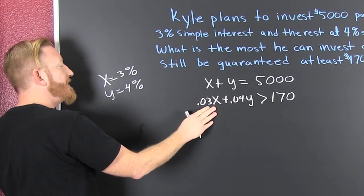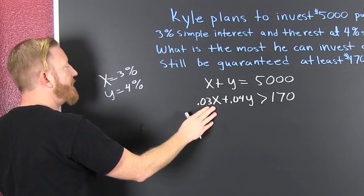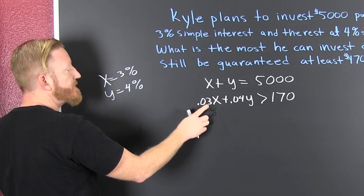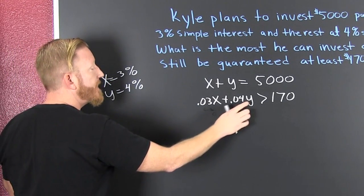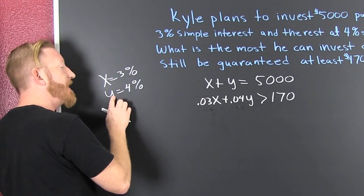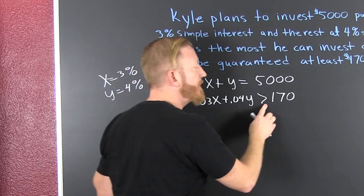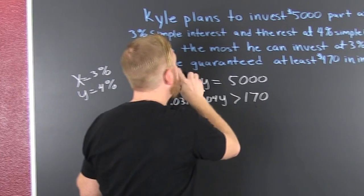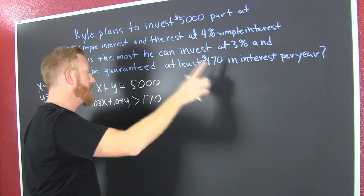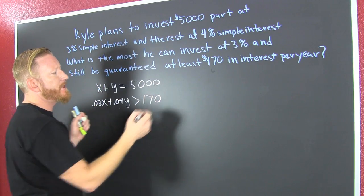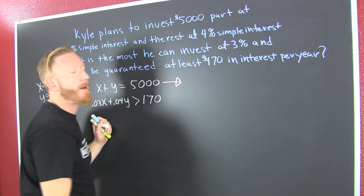Now when we're talking about simple interest after a year, whatever he invests at 3%, that's how much money he's going to get. Whatever he invested at 4%, that's how much money he's going to get. So we want that to be bigger than $170 because he needs to be guaranteed at least $170 a year. It's part of his investment strategy.